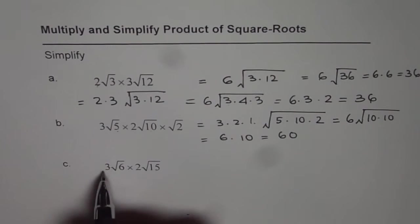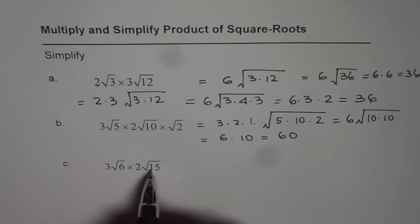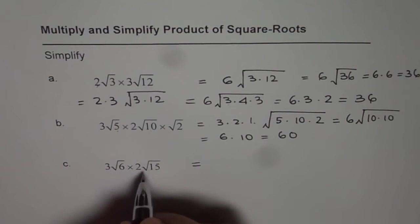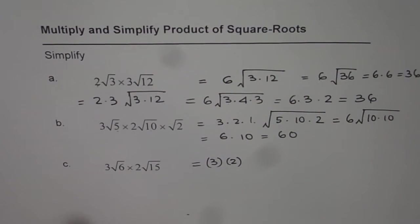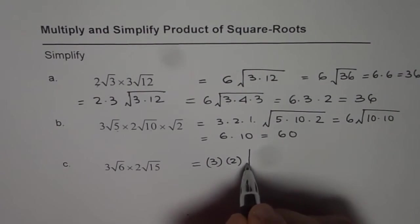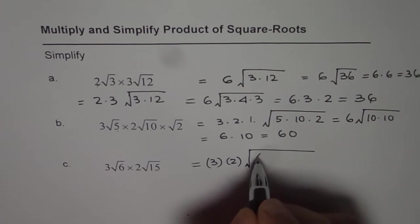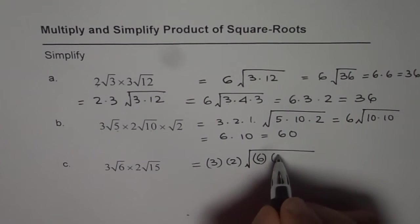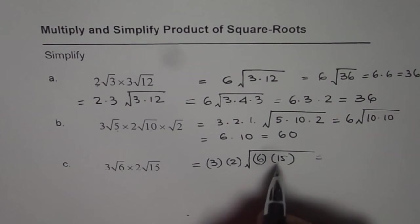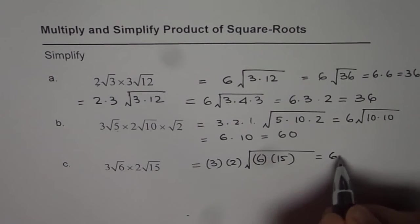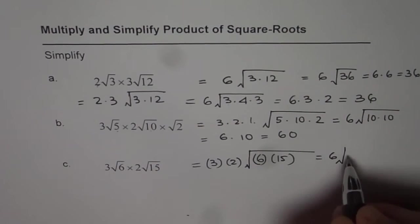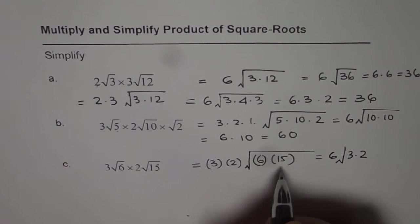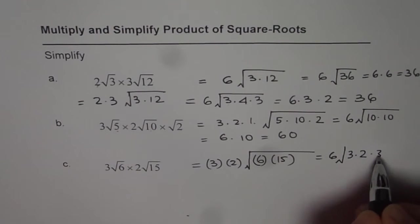Let's do the next one. 3√6 times 2√15. 3 times 2, let's multiply 3 and 2. It is good practice to write them in brackets also. Within square root I have 6 times 15. Now we can factor inside terms. We get 3 times 2 as 6 and inside I am factoring that. 6 can be written as 3 times 2. 15 can be written as 3 times 5.